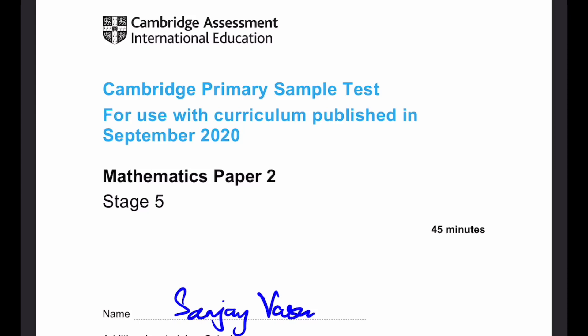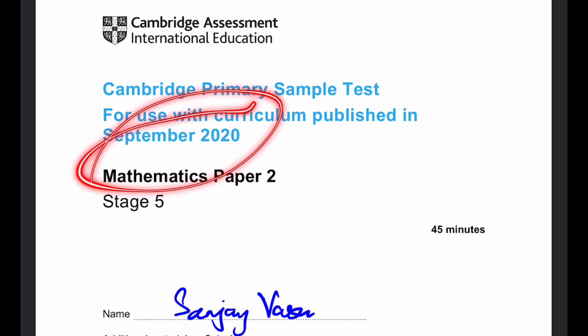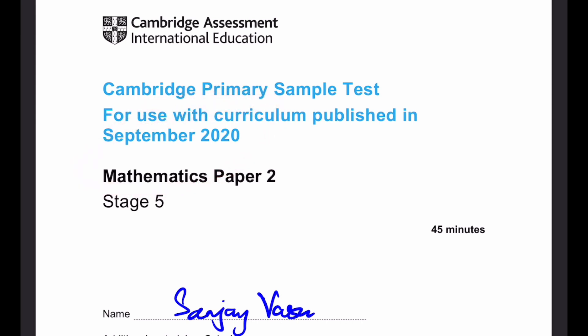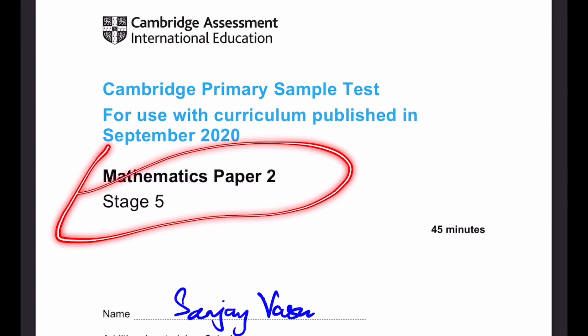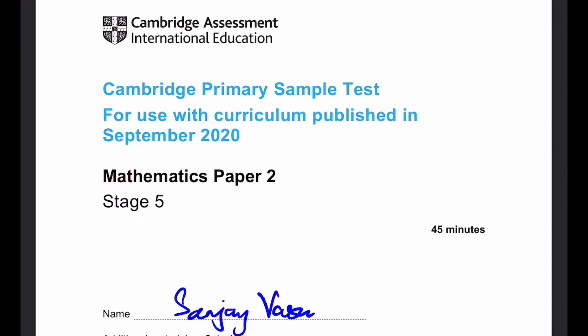Hello everyone, it's me, Sanjay Vassar, back again for another video. This time I'm doing it on the Cambridge primary sample test, September 2020. This is the mathematics paper 2 for stage 5. You may use a calculator, let's start.